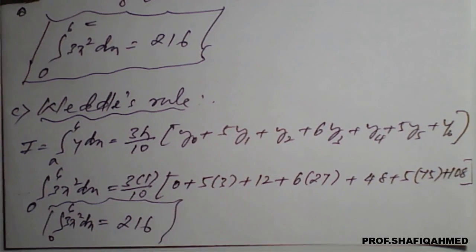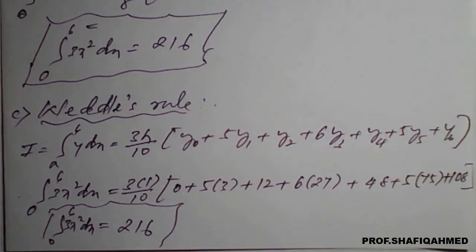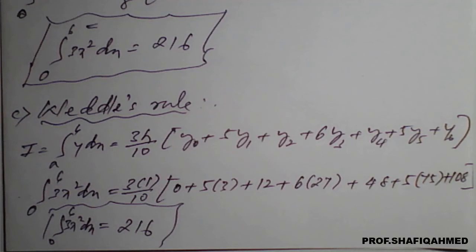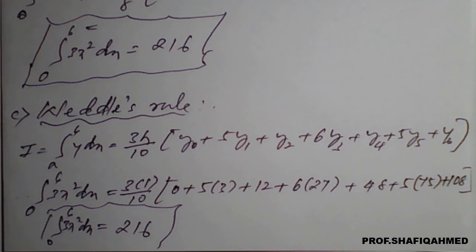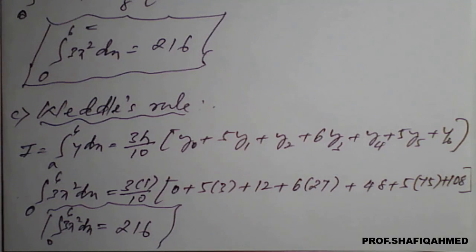You can observe here one thing — why it is possible to apply all three methods for this one example. Because here n is equal to 6. If n is equal to 6, we can apply the one-third rule, three-eighth rule, and Weddle's rule also. If they mention a particular method we go for that method, but for the sake of understanding I applied all three rules for this problem when n is equal to 6. In this way we simplify a problem based on numerical integration using the respective rules.